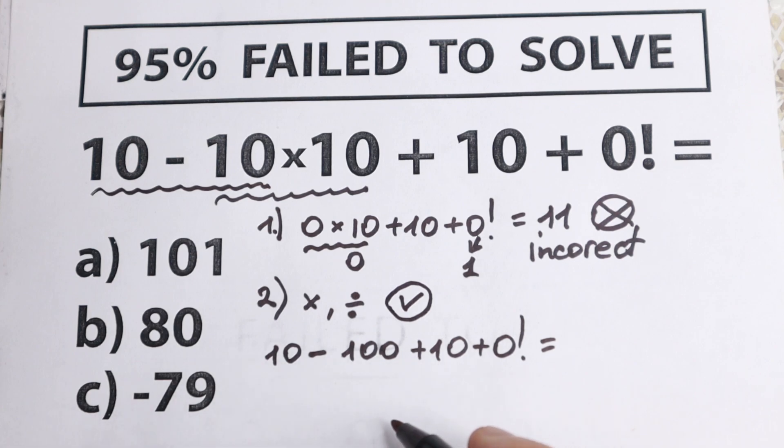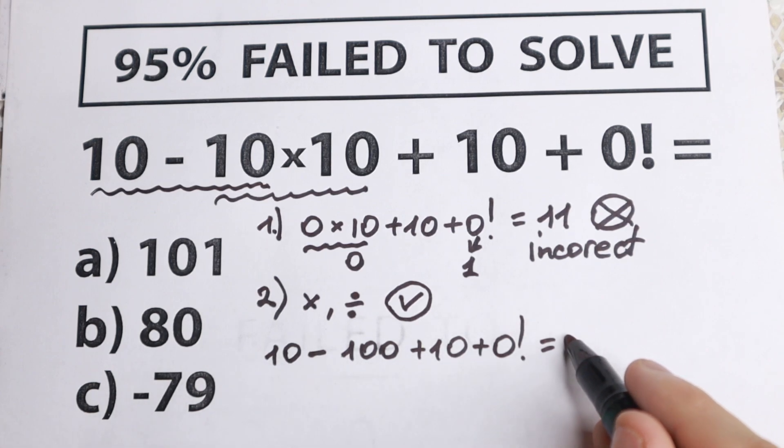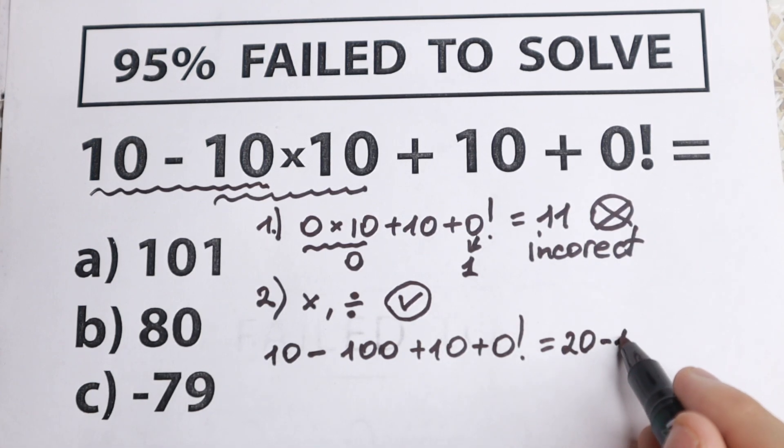But let's find our final answer. What do we have? 10 plus 10. It will be 20. So as a result, we have 20 minus 100.